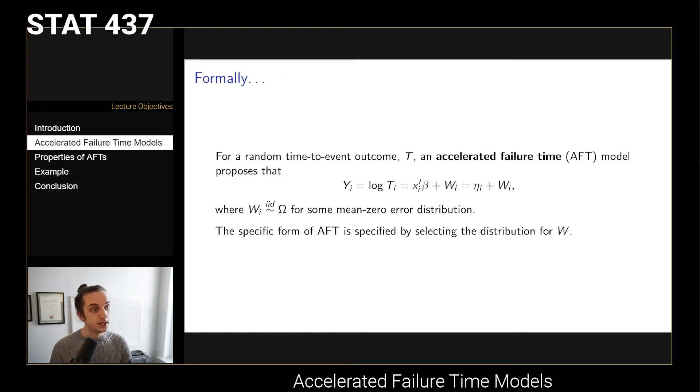Formally, if we have a time to event variable T, then an accelerated failure time model or AFT model says that we take Y, which is the log transform of T, and it renders it with xi beta plus some error distribution. This is the core of the accelerated failure time model. We're fitting the mean to be based on our covariates of interest, and then Wi is going to be an error term that follows a distribution.